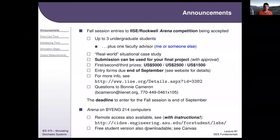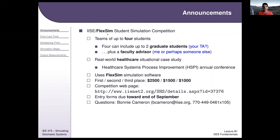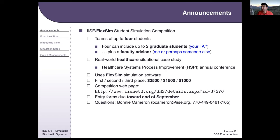There's a free student version of Arena that's downloadable, but you need a Windows machine or a Windows emulator on a Mac. Another option to consider is FlexSim, a competitor to Arena. IISE also runs a competition with FlexSim every year, and you can do this in place of your final project.